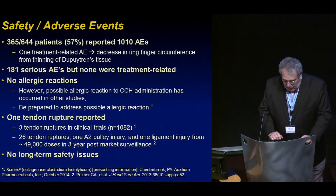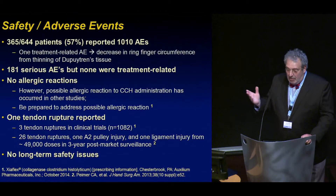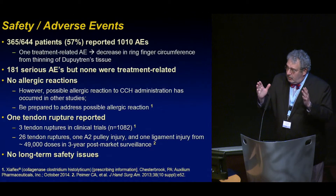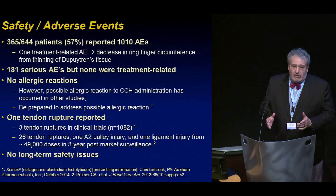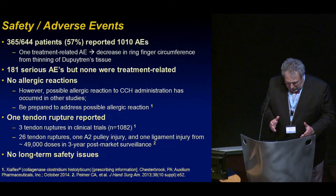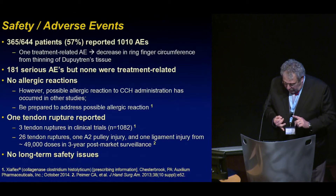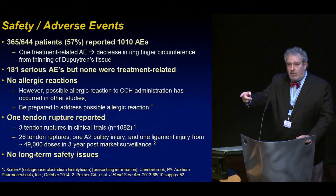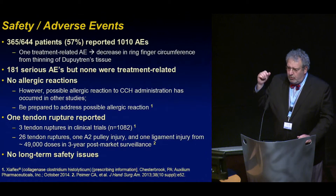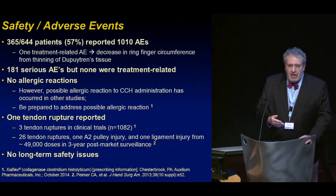There were 181 serious adverse events, but none were treatment-related — they included car accidents, broken bones; it has to be reported, so they were there. There were no allergic reactions, and this study does not include the group of patients that Dr. Pest has shared with us. However, the possibility of an allergic reaction, as with any drug, has to be considered, and appropriate resuscitative equipment ought to be kept in the office. One tendon rupture was reported in this series; there were three in the clinical trials, and 26 worldwide have been reported. One A2 pulley injury and one ligament injury were also noted, and at the point these data were calculated, there were about 50,000 cases. All tendon ruptures related to this series were late — that is to say, they were in the first 30 days, but not at manipulation.